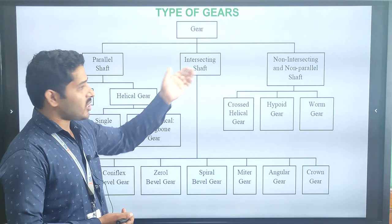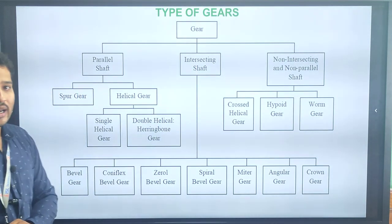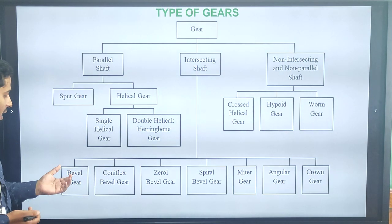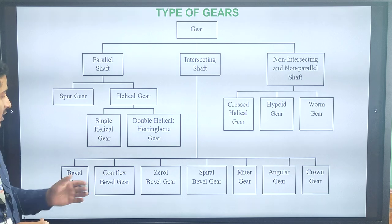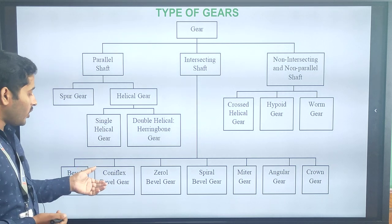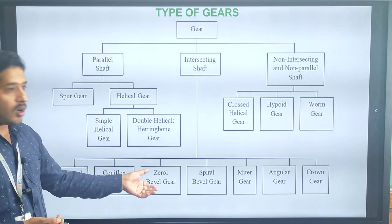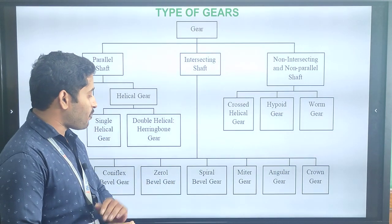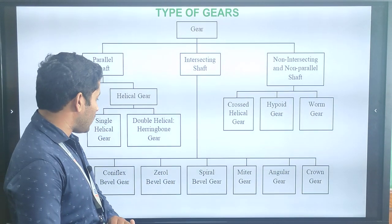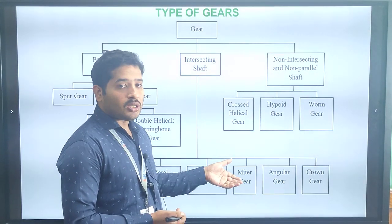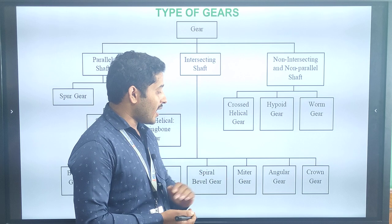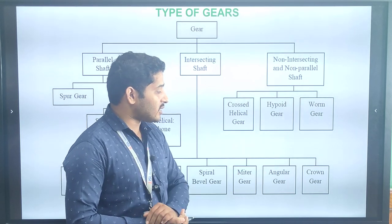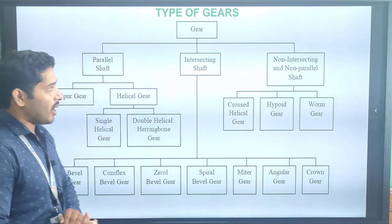The intersecting shaft gear is broadly classified into several types: bevel gear, coniflex bevel gear, zero bevel gear, spiral bevel gear, miter gear, angular gear, and crown gear.